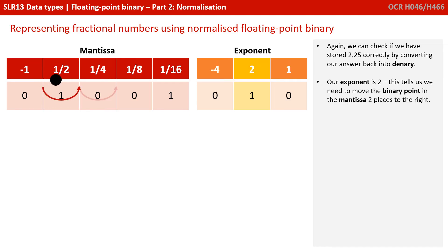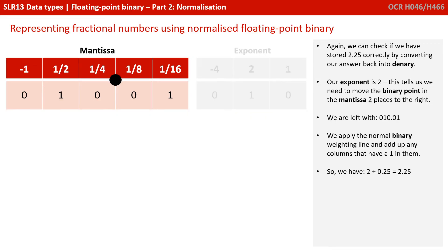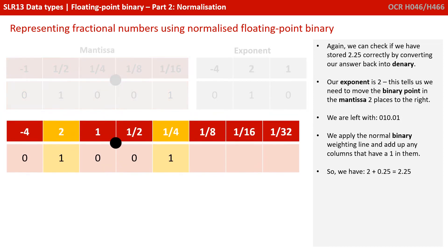We can check if we've stored 2.25 correctly by converting it back. Exponent 2 tells us to move the binary point in the mantissa two places to the right — positive exponents move to the right. We're left with 010.001. Apply the normal binary weighting line, add up columns with ones: a 1 in the 2 column, a 1 in the quarter — 2.25.